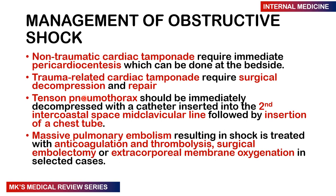For management of obstructive shock: non-traumatic cardiac tamponade can be treated with bedside pericardiocentesis, while traumatic cardiac tamponade requires surgical decompression and repair. Tension pneumothorax is managed by needle thoracostomy — inserting a 21-gauge needle into the second intercostal space at the mid-clavicular line — followed by insertion of an intercostal chest drainage tube. Massive pulmonary embolism causing shock is treated with anticoagulation, thrombolysis, surgical embolectomy, or in selected cases, extracorporeal membrane oxygenation.